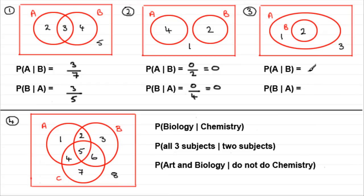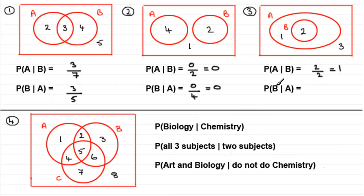Let's see how you got on. Probability someone does art given that they did biology: we know they did biology, so only two people do biology — our denominator is two. Of those two people, both did art because they're within A. So it's two out of two, which equals one. It's guaranteed that if somebody is doing biology, they will be doing art. For probability of B given A: we know they do art, so three people do art in total — denominator is three. Of those, just two do biology. So it's two thirds.